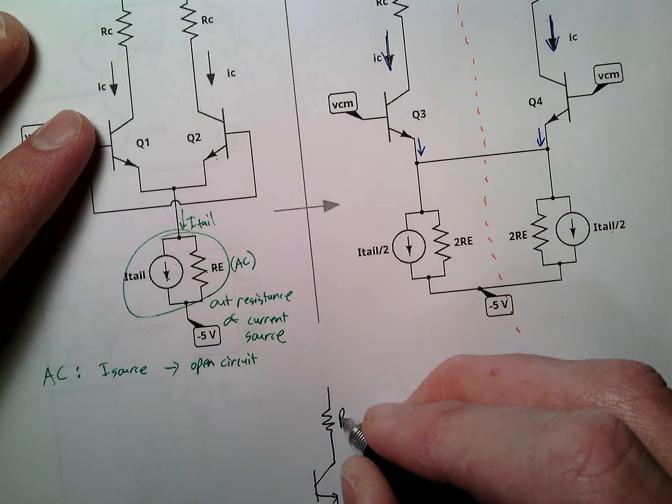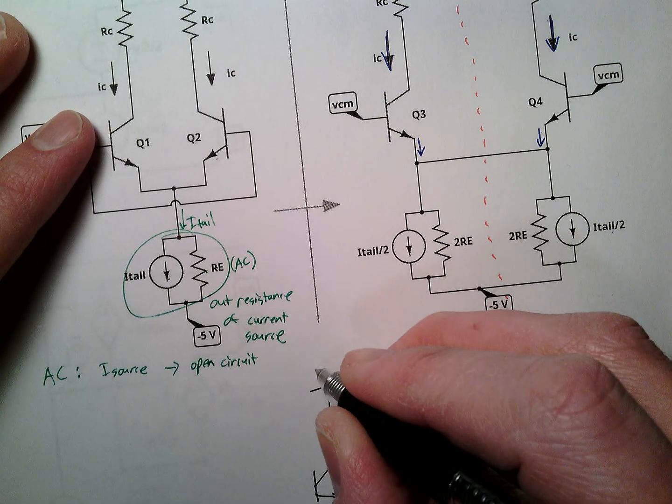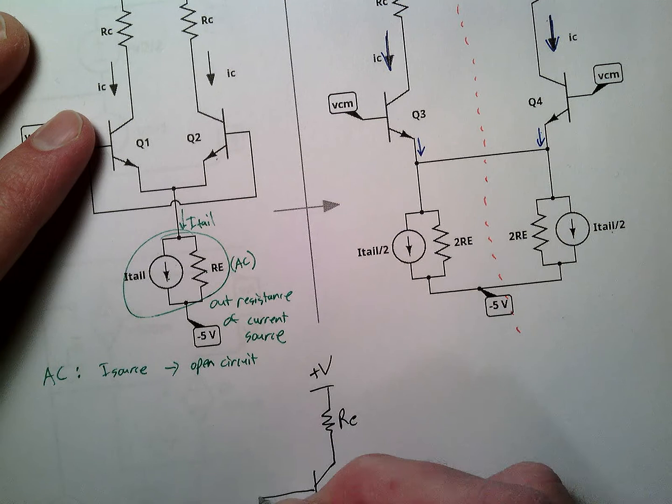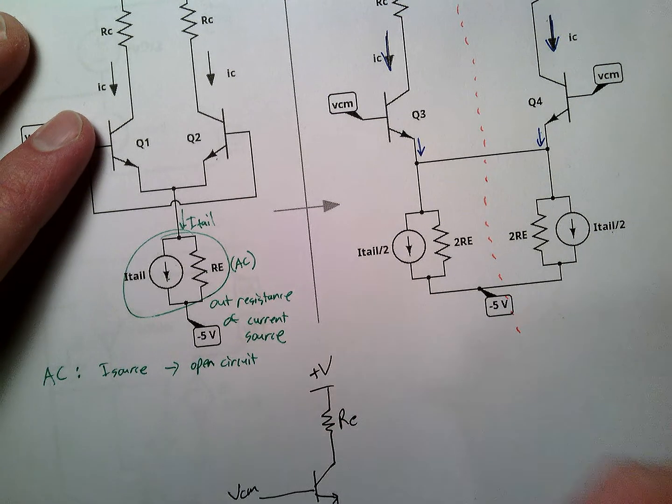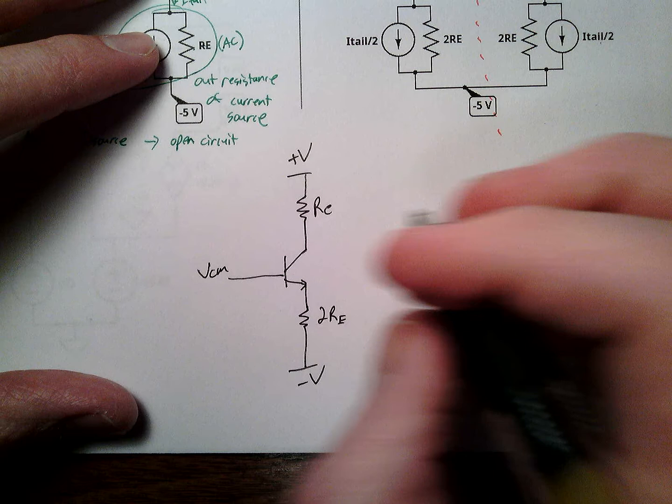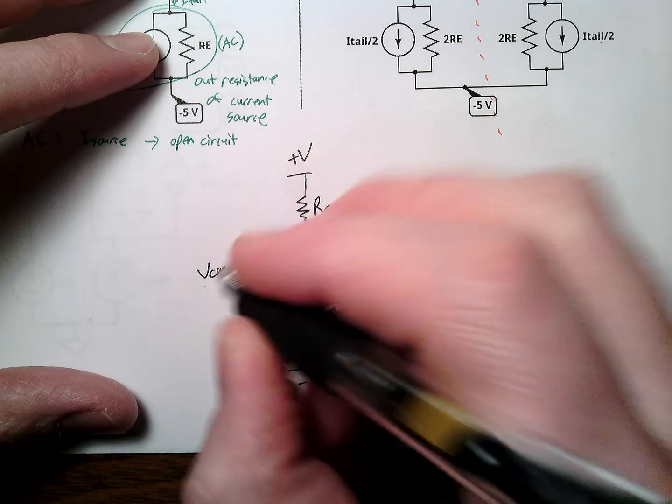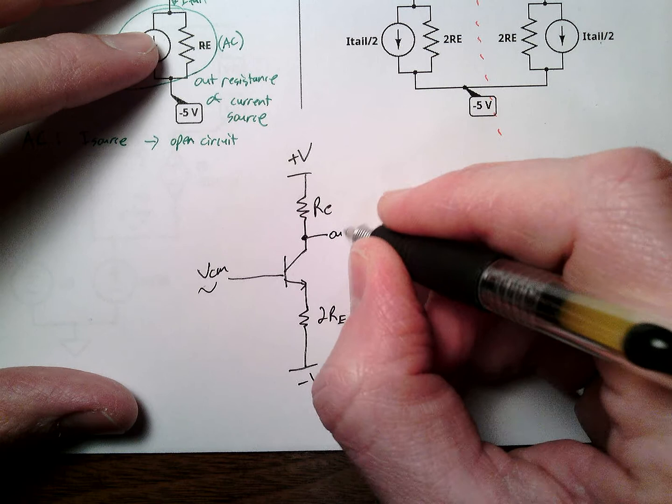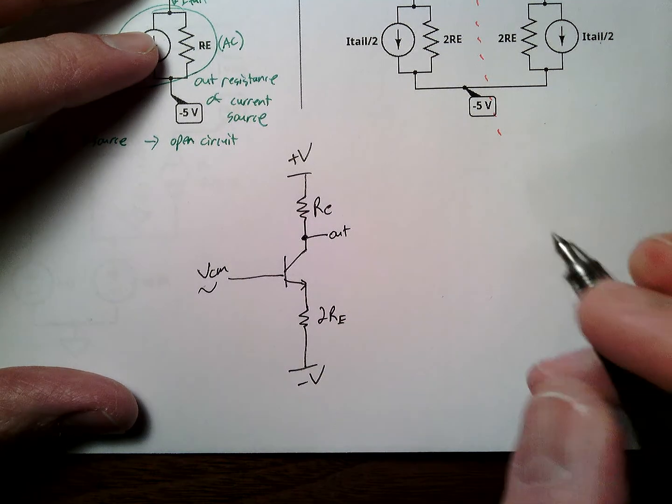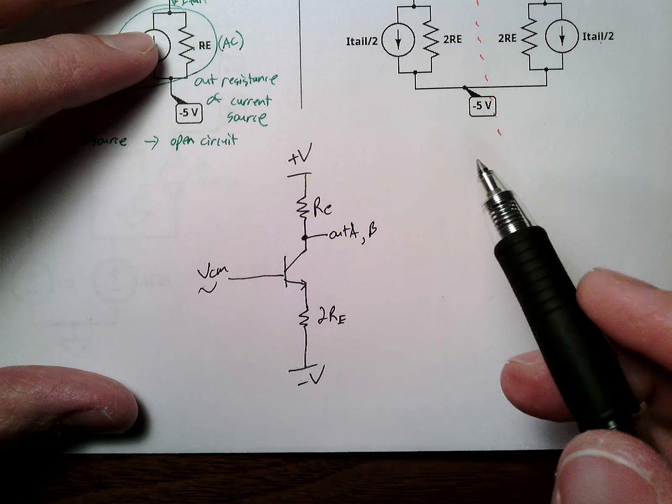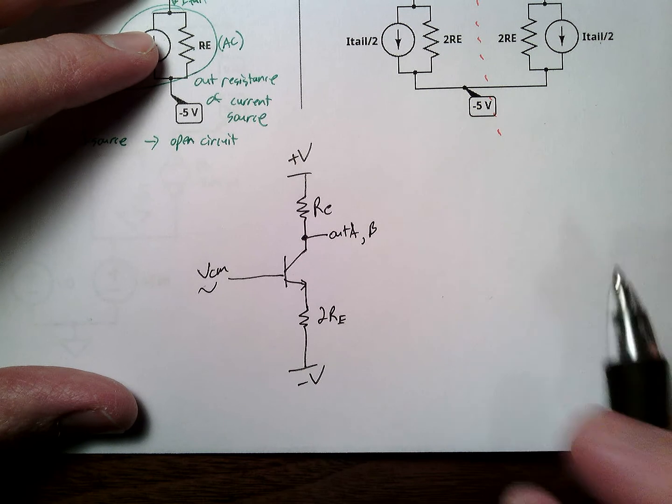2RE and RC plus voltage, minus voltage. We can just do the symbolic VCM. So VCM, I'll move this up. So VCM is our input. Remember, this is going up and down. It has a DC value also. Many times, this is our output. Out A, out B, if we're looking at the left side or the right side. This is now just a common emitter amplifier.